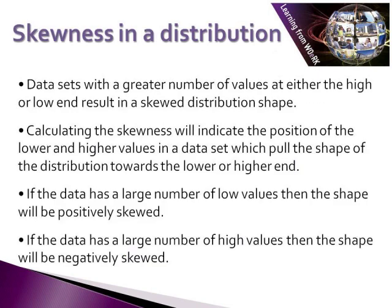In our first measure of understanding the shape of our distribution, we think about the skewness of a distribution. If the observations gathered in a data set have a greater number of values at either the high end or the low end of the distribution, then the distribution is going to become skewed. Calculating the skewness helps to indicate the position of the lower and higher values, which pull the shape of a distribution either towards the lower or the higher end. If the data has a very large number of low values, the shape will be positively skewed. If the data has a large number of high values, the shape will become negatively skewed.